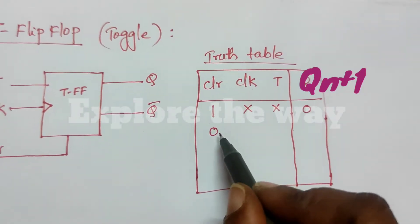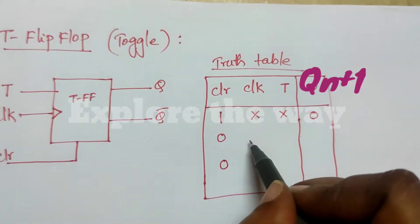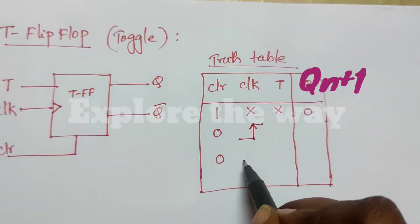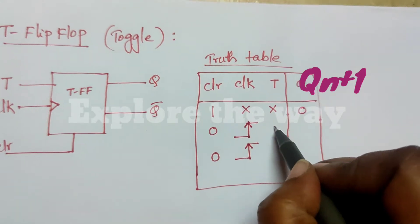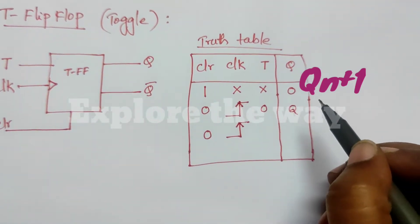When clear input is 0, then at the positive edge of clock, if T is 0, output remains in the previous state.